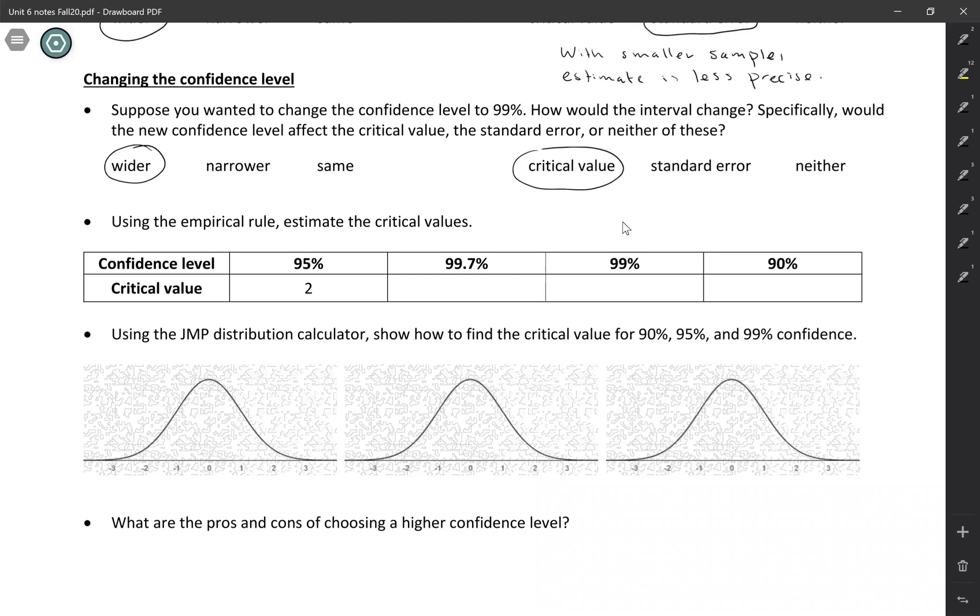In the previous activity, you saw that if you want to change the confidence level to 99%, it's going to make your confidence interval wider, and that's because the critical value is getting larger.